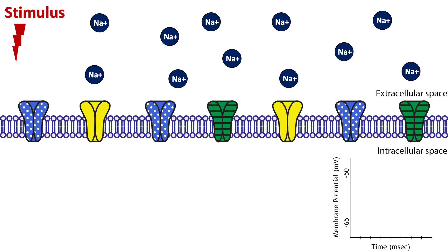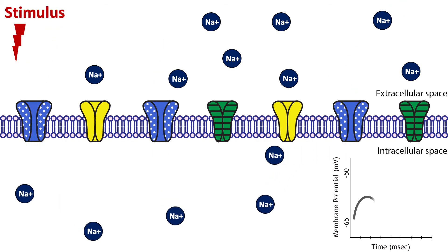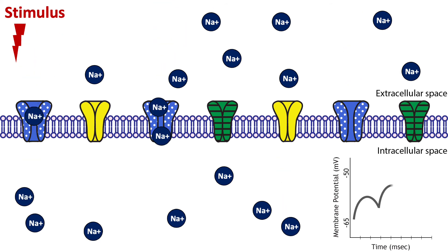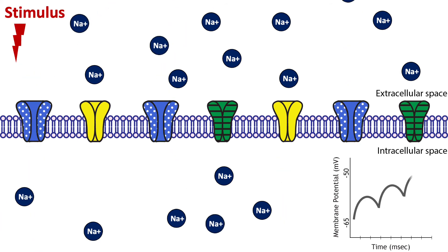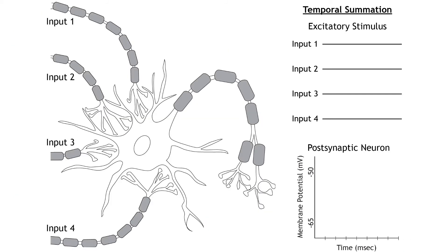If an excitatory stimulus is followed by additional excitatory stimuli, the sodium channels will either remain open or additional sodium channels will open. The increased sodium conductance will cause the EPSPs to summate, depolarizing the cell further than one EPSP alone. Each neuron has a threshold membrane potential at which the cell will fire an action potential. The summation of EPSPs causes the neuron to reach that threshold.